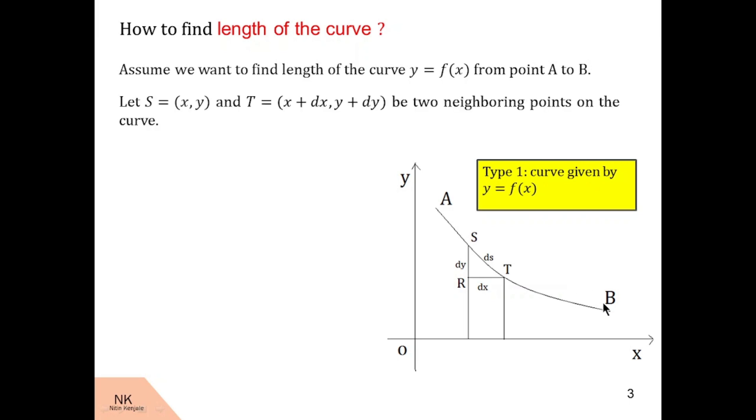Now we will take two neighboring points S and T on this curve, where (x, y) are coordinates of S and (x + dx, y + dy) are coordinates of T. Then we choose a point R such that triangle SRT makes a right angle triangle.